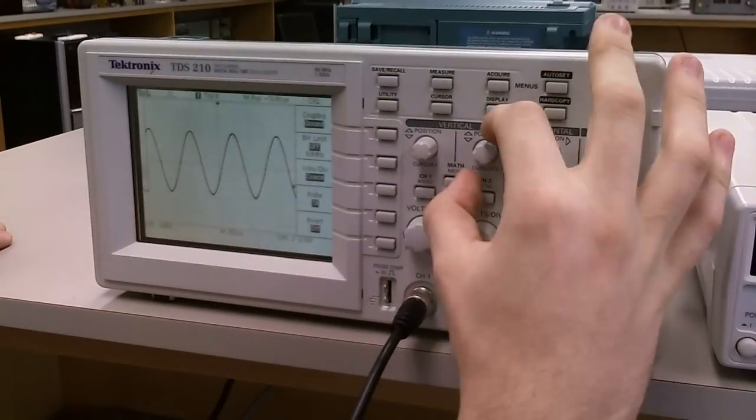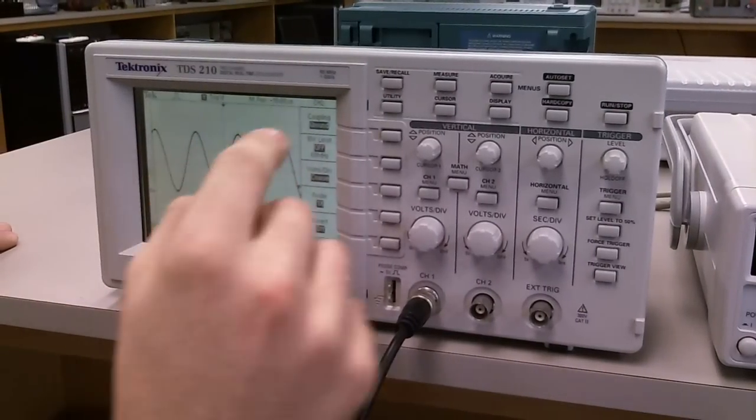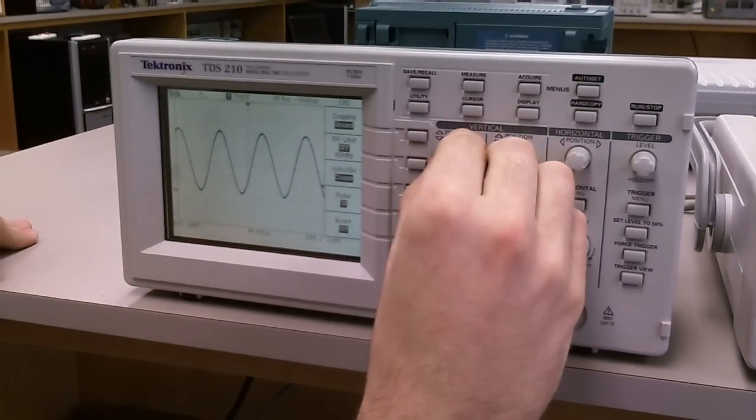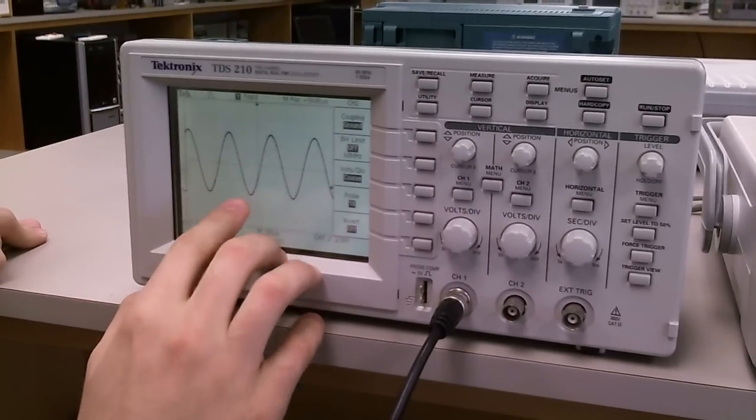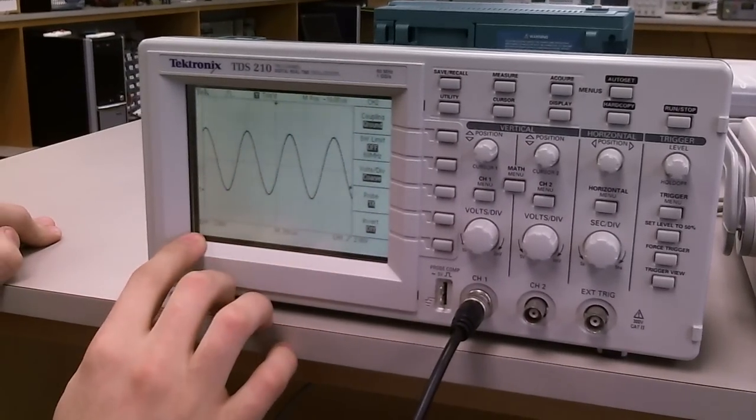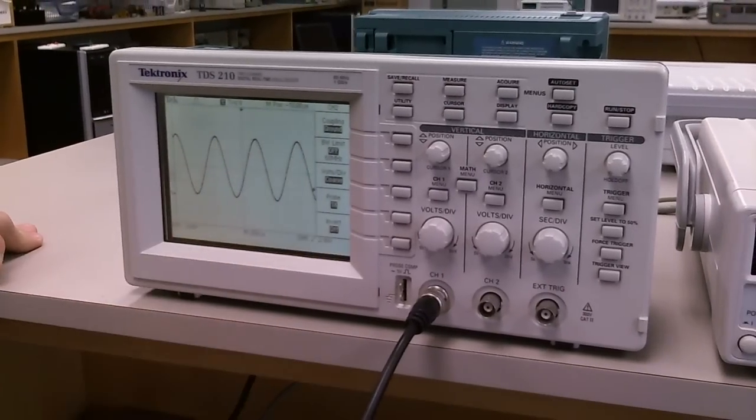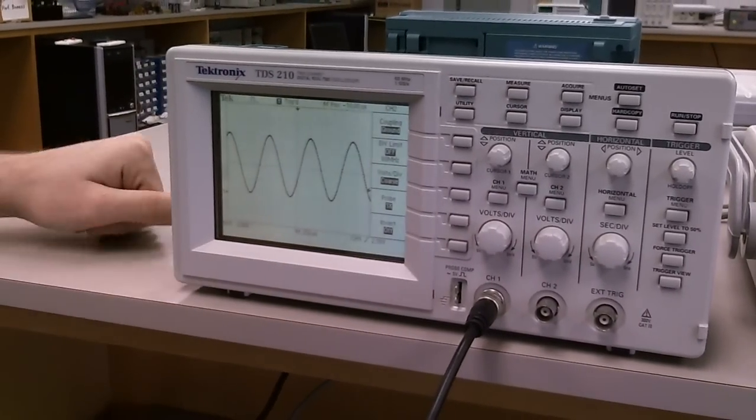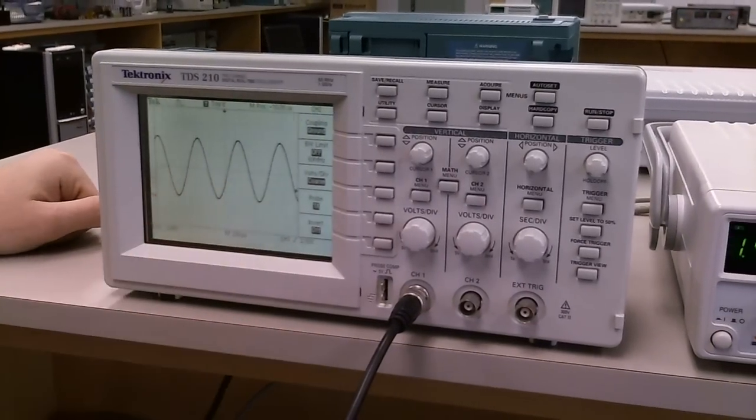In this case if we align the wave with its axis with the center of the screen, we can see that it covers about two grid lines in both directions. And since our scale is at two volts, two grid lines would represent four volts. So in this case our amplitude is four volts.